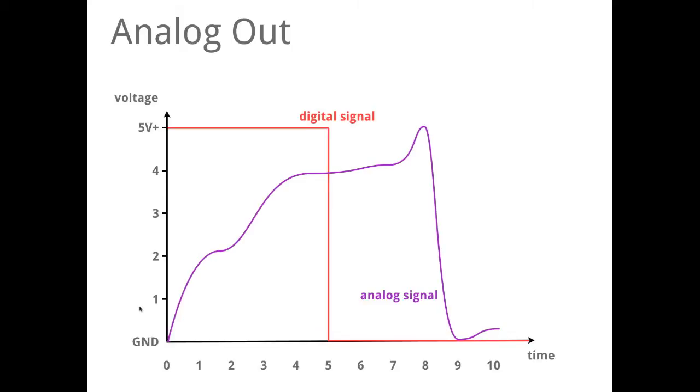It's like the knob at your stereo at home, this could be the volume. Or if you have to dim your light at home. These are all analog signals. So unfortunately Arduino can't really give out analog signals.